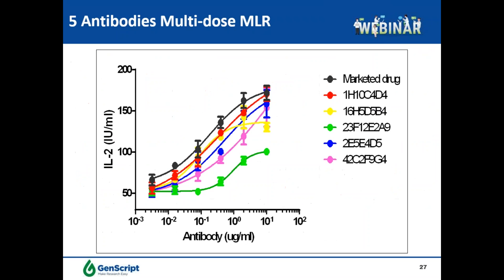Ligand blocking activities of the 12 antibodies were also evaluated by FACS against the membrane-bound target. Most antibodies showed efficient ligand blocking activity, except for 21H11D7 and 23F12E2A9, consistent with the ELISA EC50 results. After those binding and ligand blocking activity tests, five antibodies were selected for multi-dose mixed lymphocyte reaction functional assay, with the marketed drug used as reference control, yielding therapeutic leads with comparable in vitro functional activity.